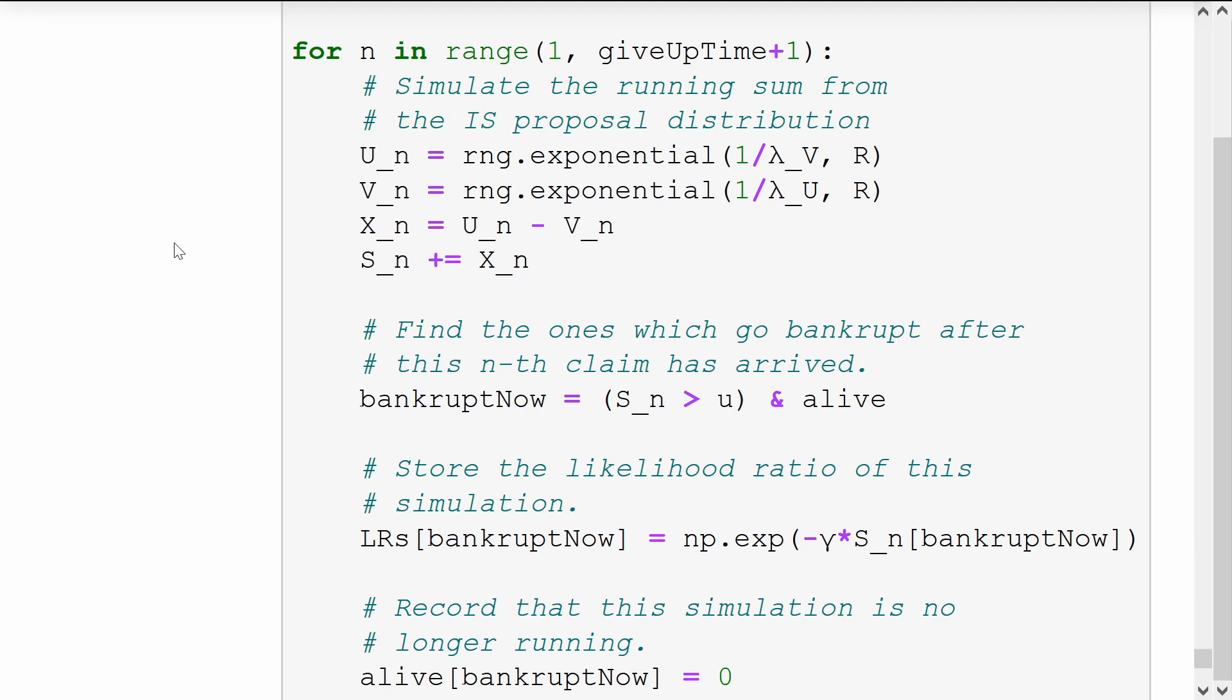We pull out those replications which go bankrupt at this specific claim. And for those, we store the likelihood ratio, which is e to the minus gamma times the value of the sum at this point.